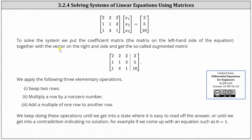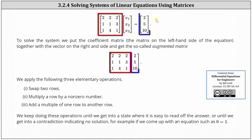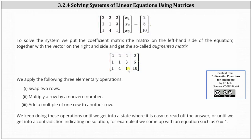To solve the system, we put the coefficient matrix — which is the matrix on the left side of the equation — together with the vector matrix on the right, and get what's called an augmented matrix. Below we have the augmented matrix for the system of equations.